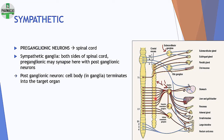The post-ganglionic fibers go to the target organs — stomach, liver, gallbladder, and so on. These are the target organs. The red representation is sympathetic, and this is the basic structure of the sympathetic nervous system.